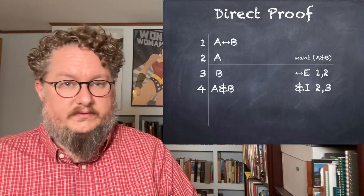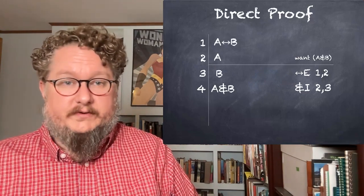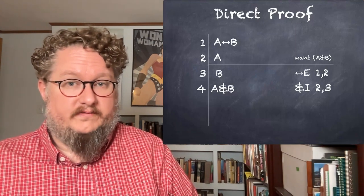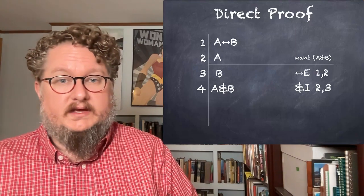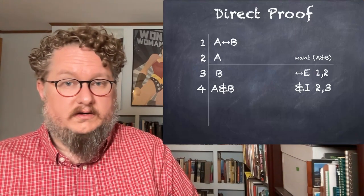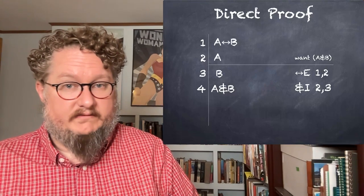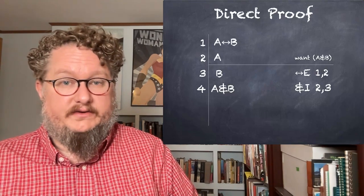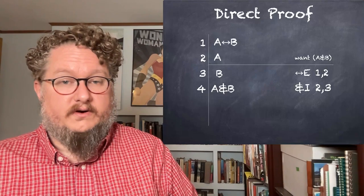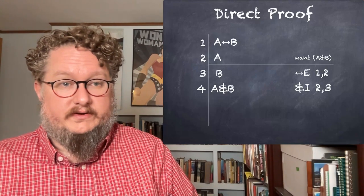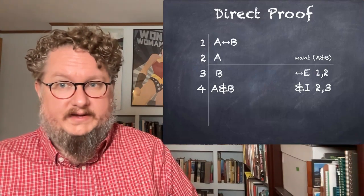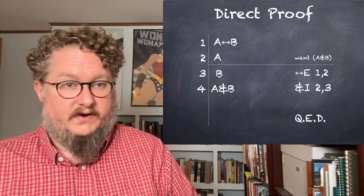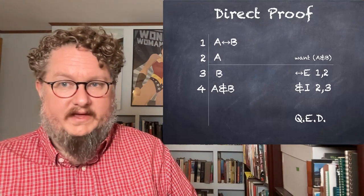With a direct proof, here's a simple one: you have your premises on lines one and two. We want to prove A and B. Lines three and four are each justified by the application of a rule. Line three is justified by the biconditional elimination rule applied to lines one and two, and line four is justified by the conjunction introduction rule acting on lines two and three. That's all we need to prove it — quod erat demonstrandum, QED.